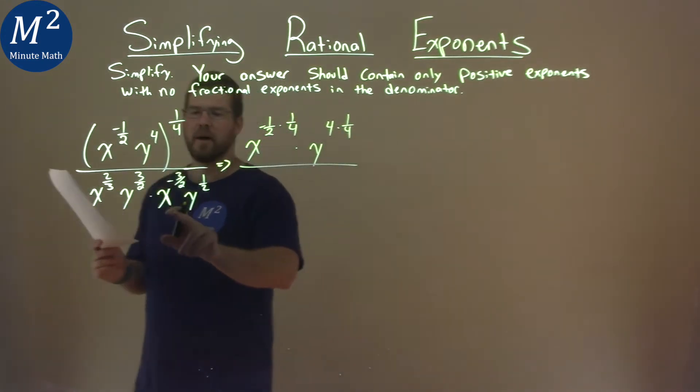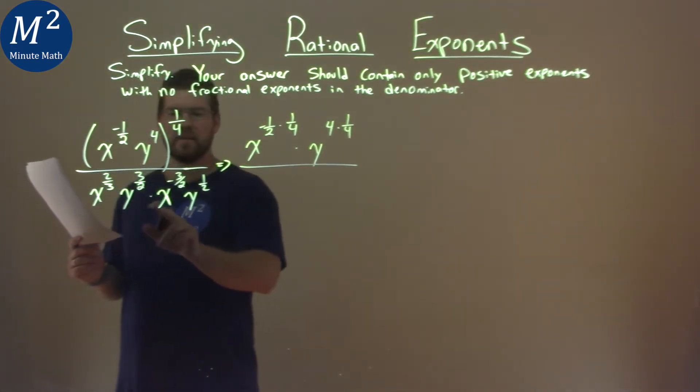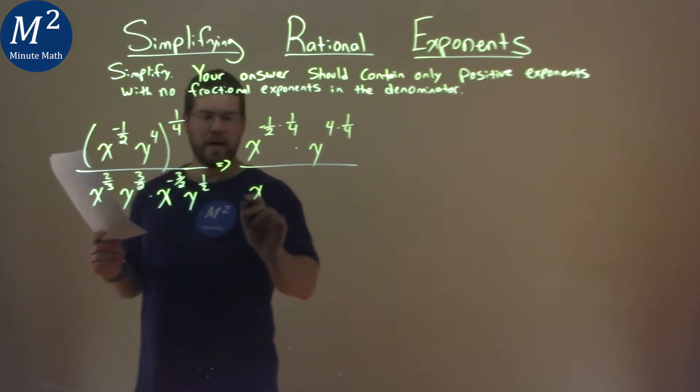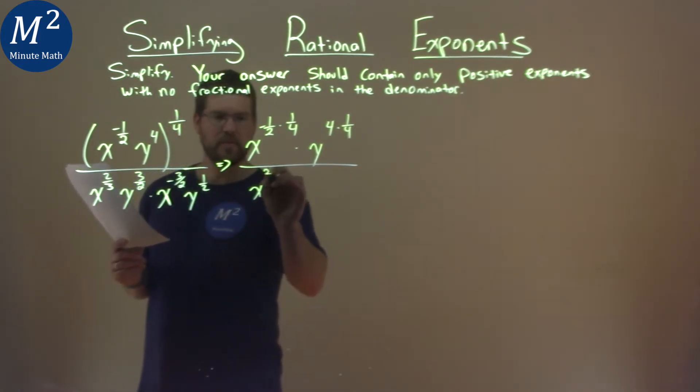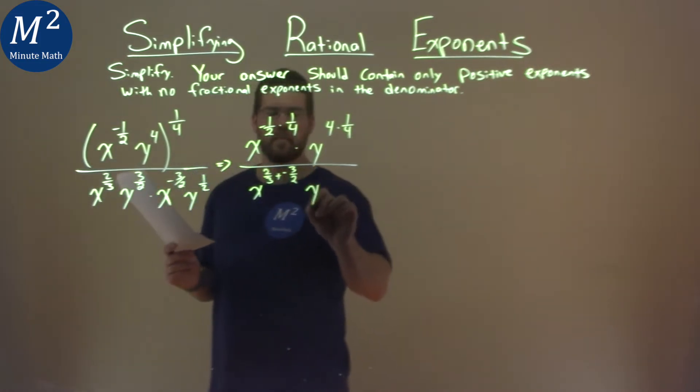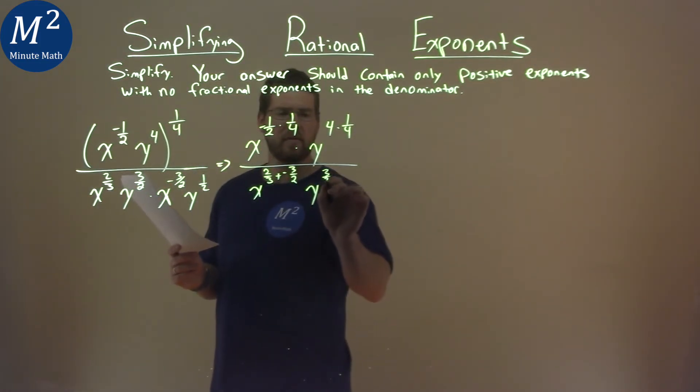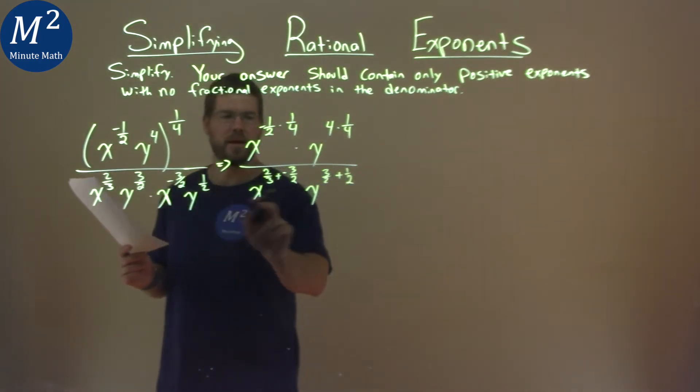The denominator here, I'm going to combine my like bases. I have x and x here, so when we combine them, remember when we multiply we add the exponents. So we have two over three plus a negative three-halves. Same thing with the y's. Y here, we have three-halves, and then we're going to add the other one-half by combining them there.